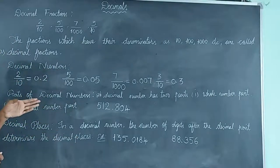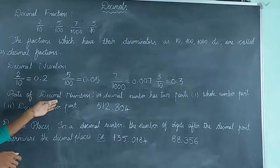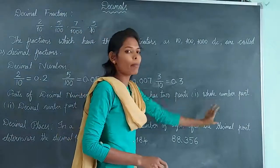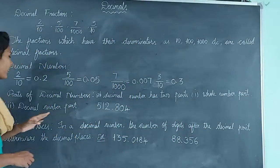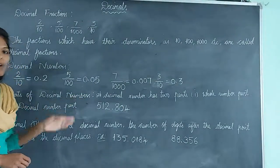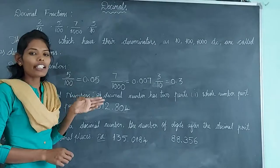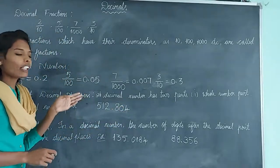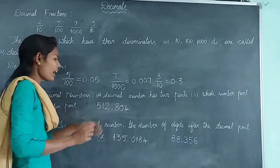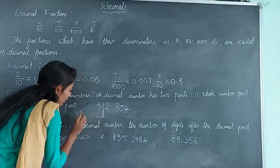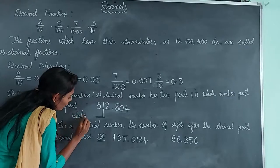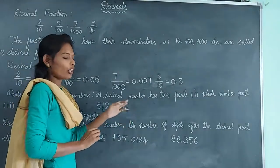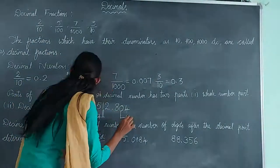Now let us know how many parts are there in a decimal number. A decimal number has 2 parts: one is the whole number part or integral part, and another one is the decimal number part or fractional number part. In this example, here we have the decimal number 512.804. Here 512 is known as the whole number part, and .804 is known as the decimal number part.